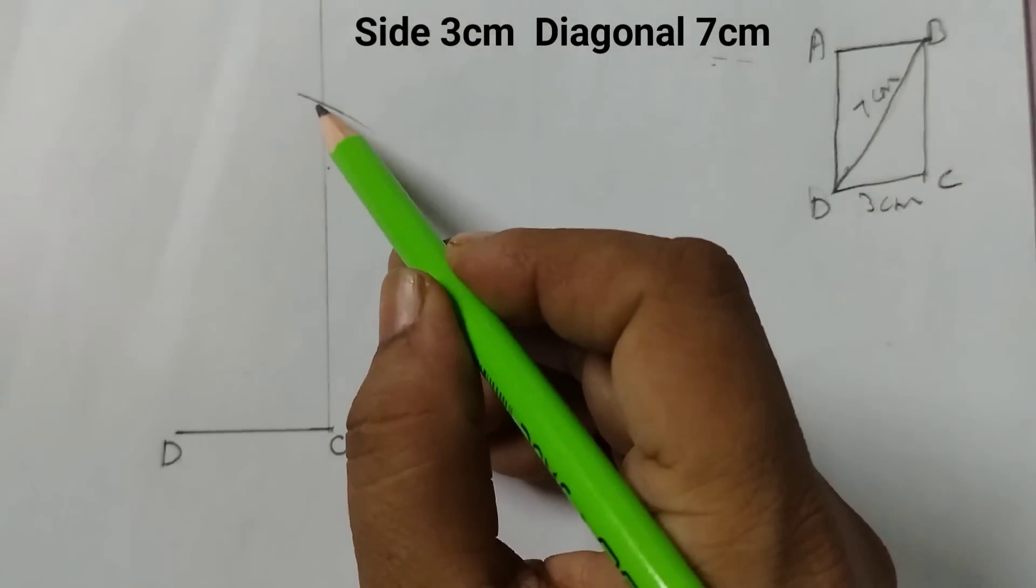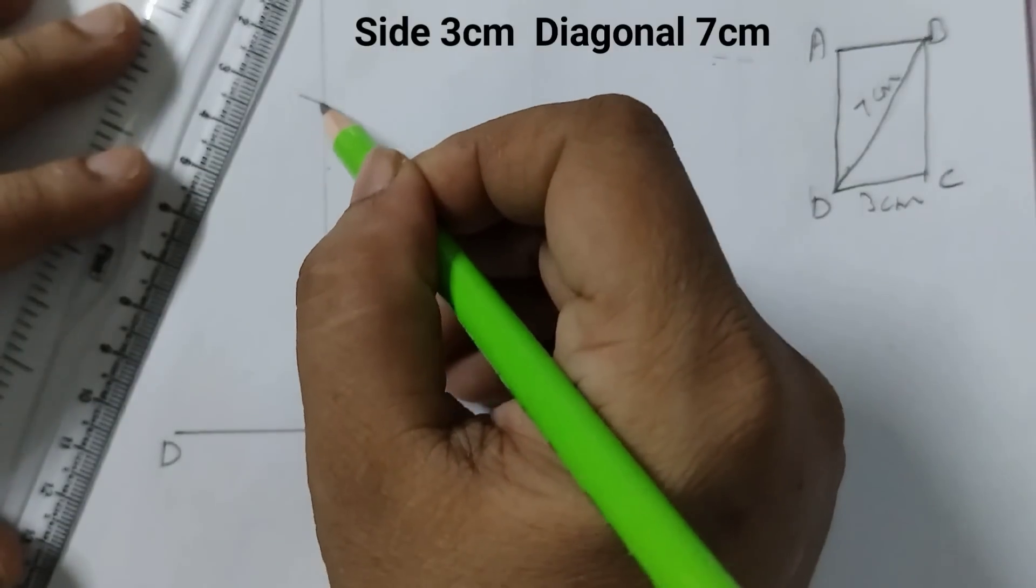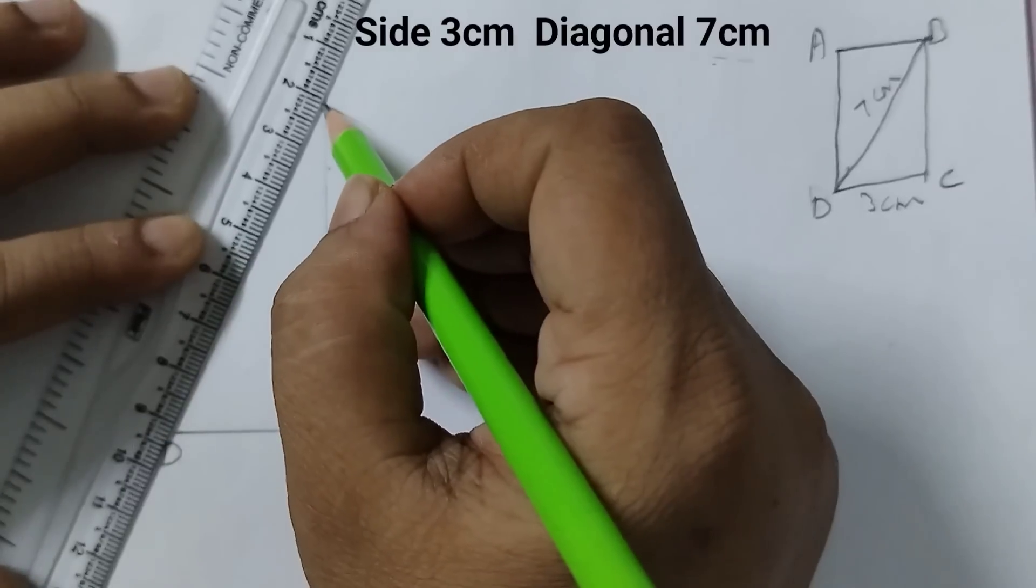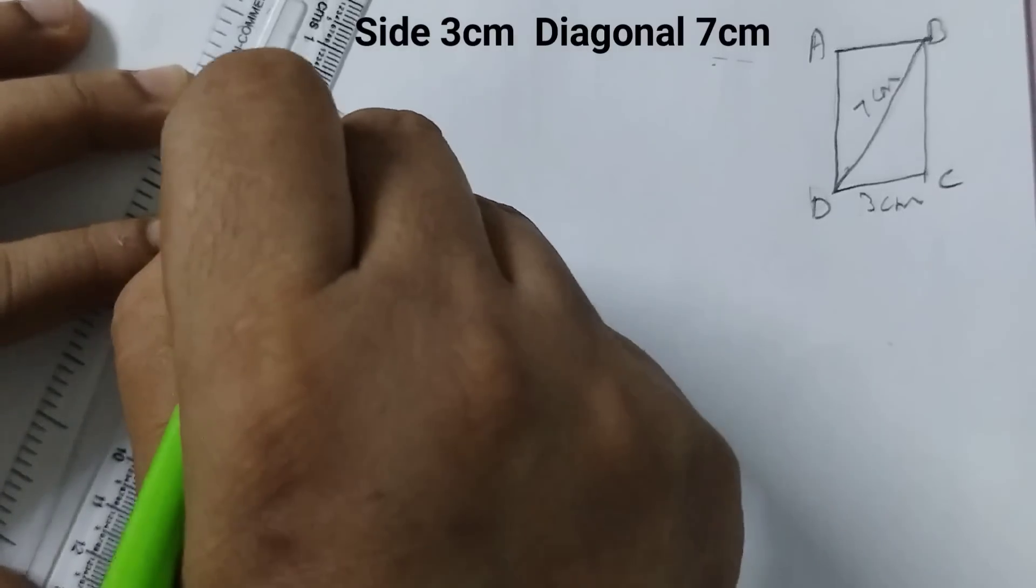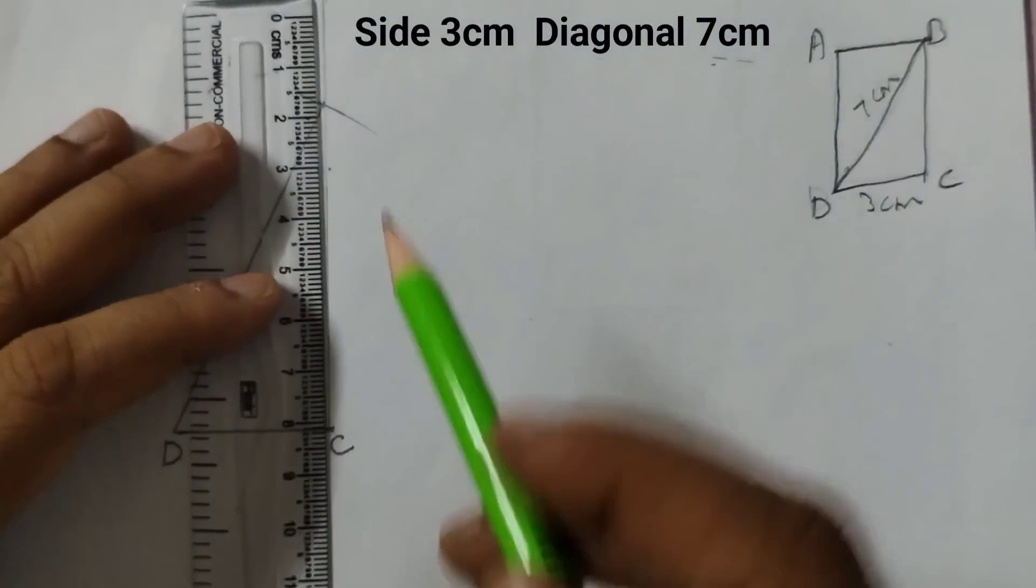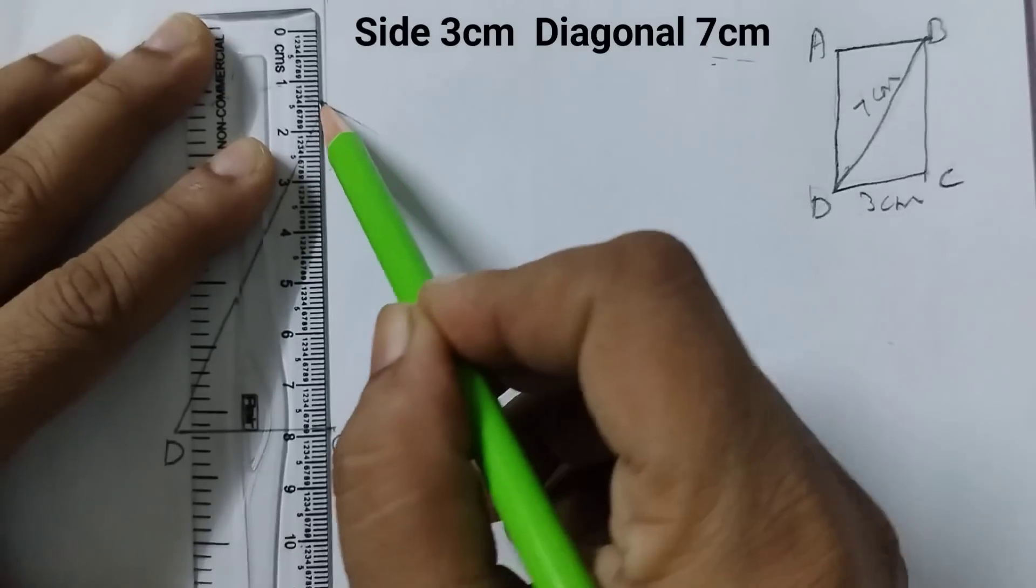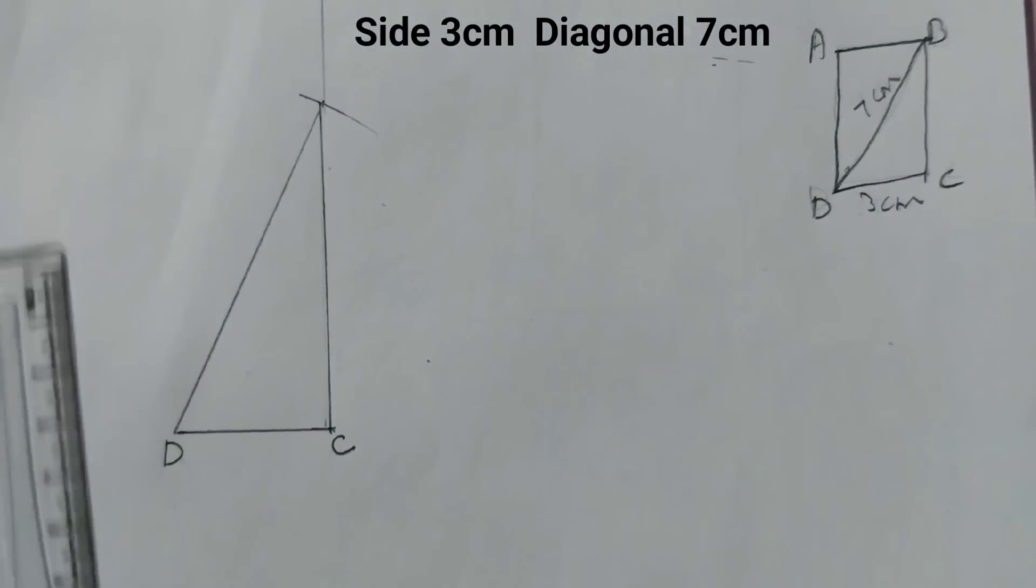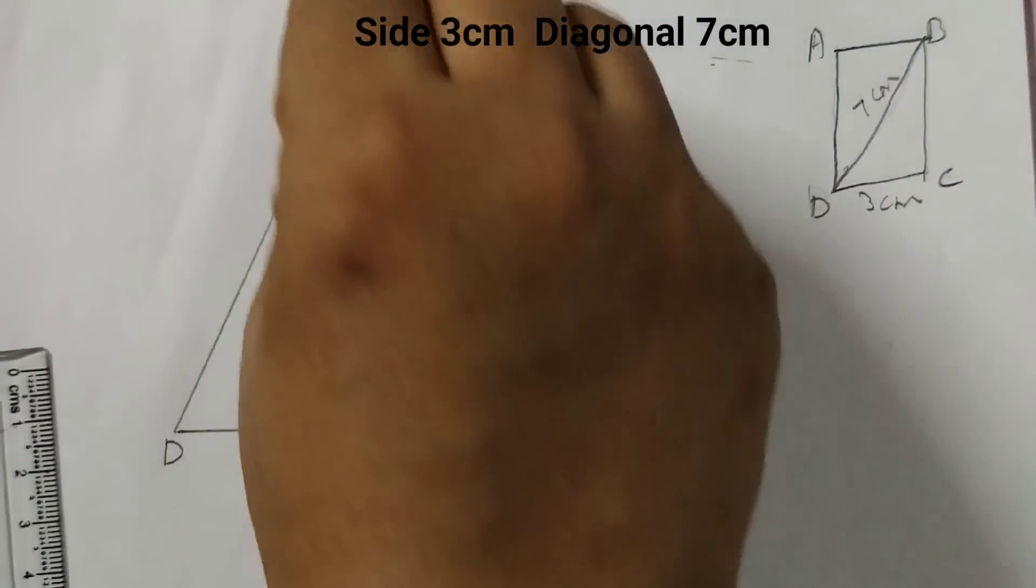Join these two points. And now I am making this darker. Okay, the extra lines I am going to erase off.